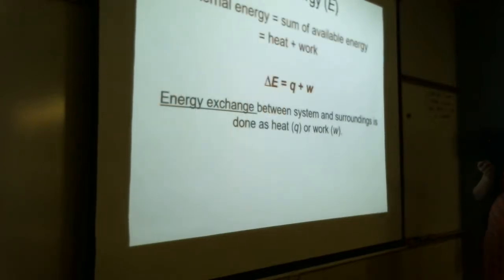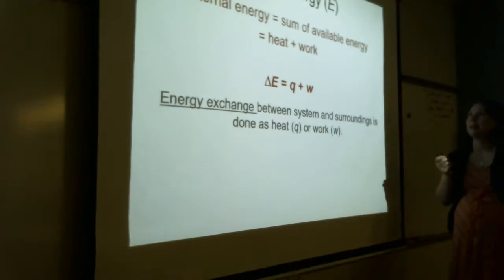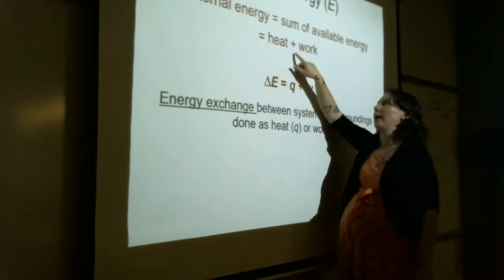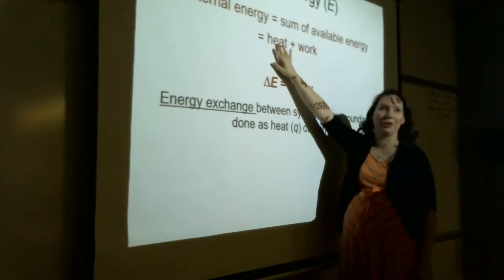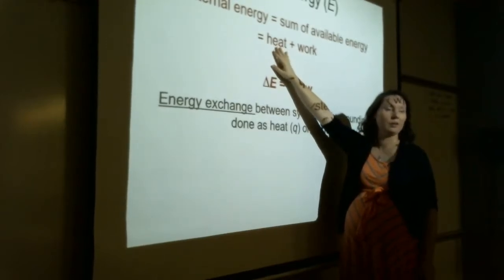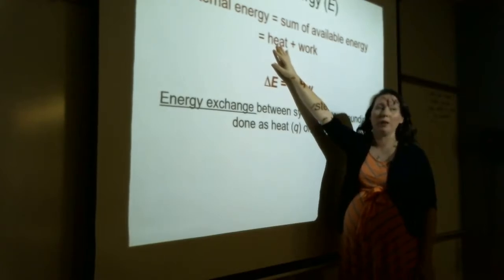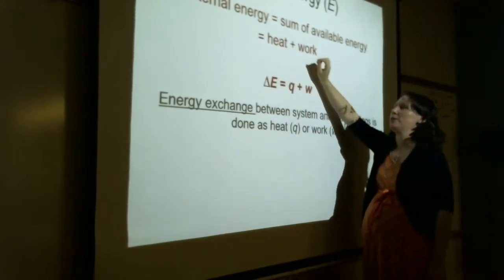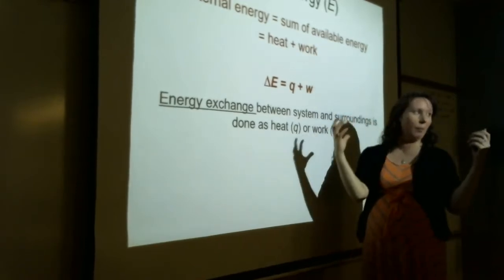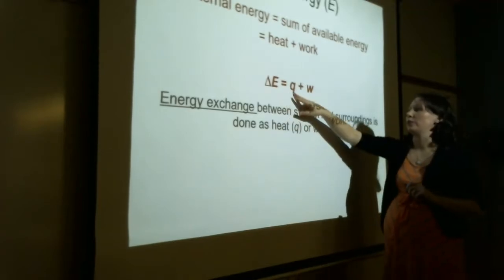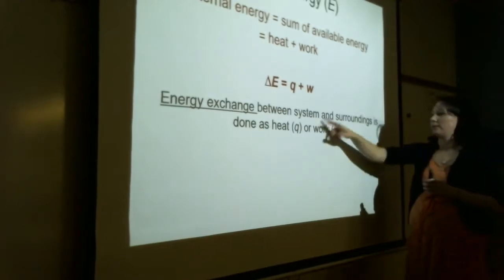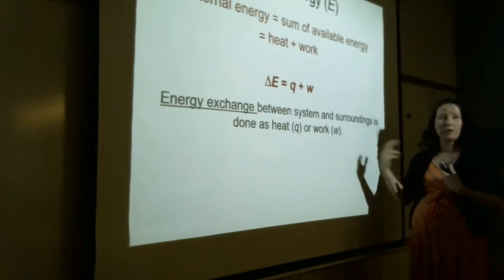Internal energy, represented as uppercase E, is the sum of all the available energy to our system — in other words, heat and work put together. So delta E equals Q plus W. When exchanging energy between the system and surroundings, it can be done as heat or as work.